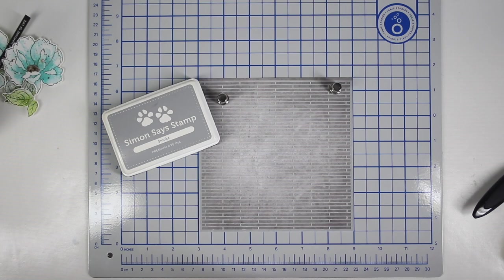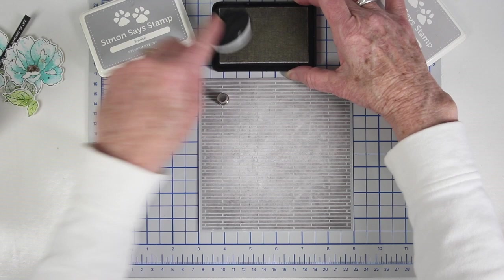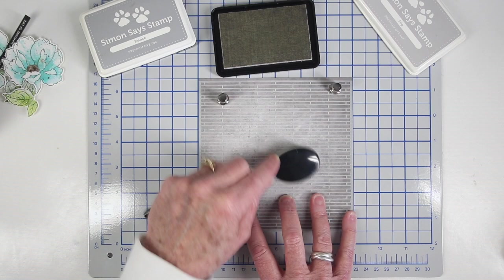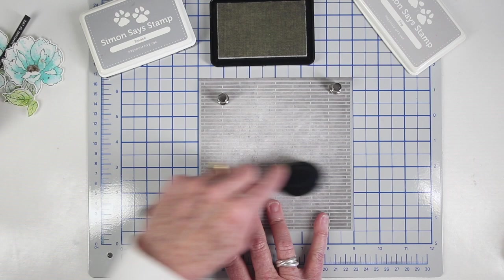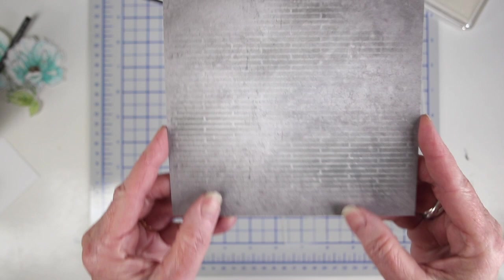For my stenciling, I'm using a couple of Simon Says Stamp Gray inks, and these are Fog and Smoke, and I'm just using a blending brush. I'll put my darker color towards the outside, and then my Fog ink towards the inside, so I'm just going along and stenciling this in, and I'm going random. I'm not going to do the entire stencil. I want it to kind of look like stucco and have a distressed look. So once I'm done, I can just peel off my stencil off the sheet of the paper, and here's how this background looks.